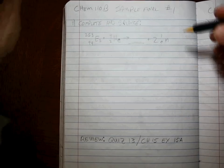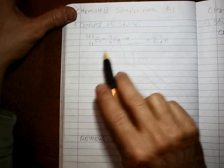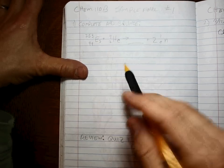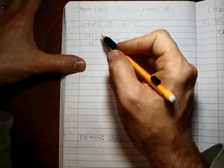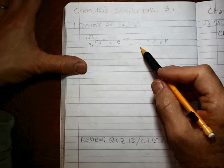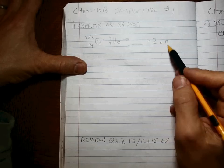Okay guys, it's sample final for Chem 110b, problem number one. This is nuclear balancing of a nuclear equation. We've got Einsteinium-253 plus Helium-4 goes to something plus two neutrons.